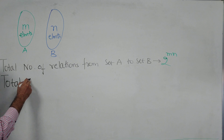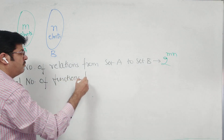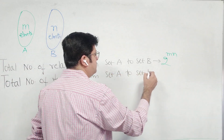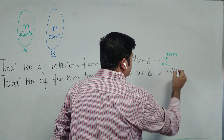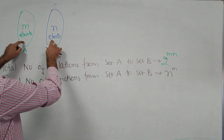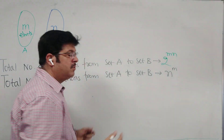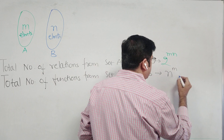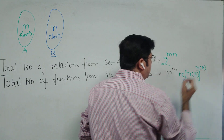Total number of functions from set A to set B is the number of elements in B to the power number of elements in A. In case this gets mixed up in the exam, remember it could be mistaken as N to the power M. So it is always advisable to remember it as: number of elements in set B to the power number of elements in set A.